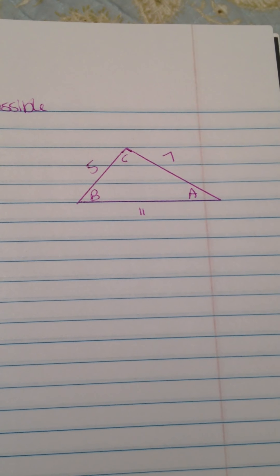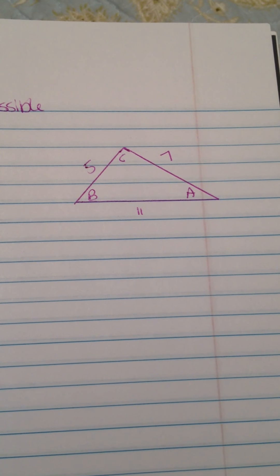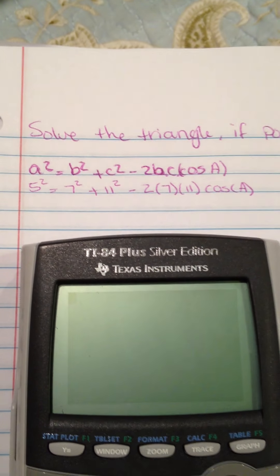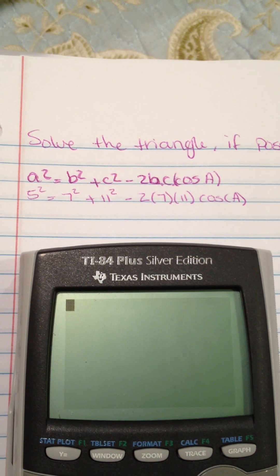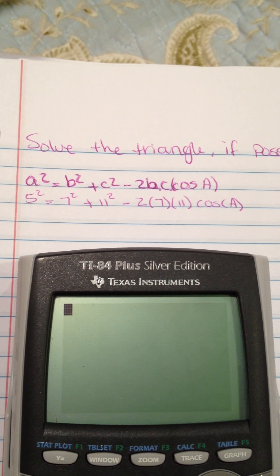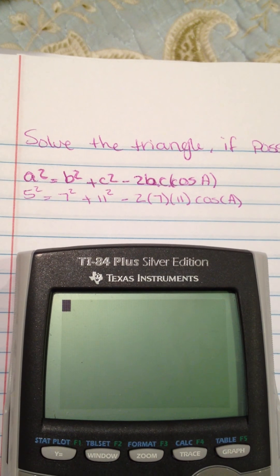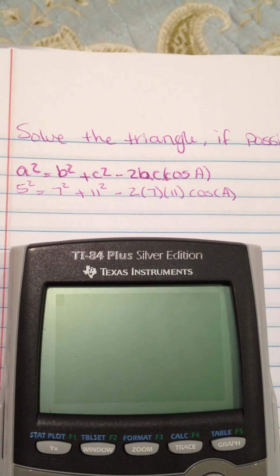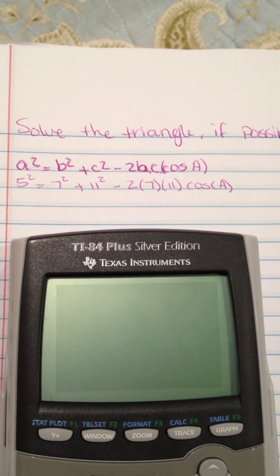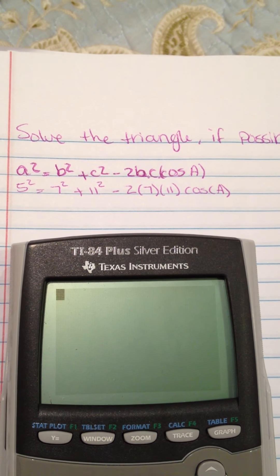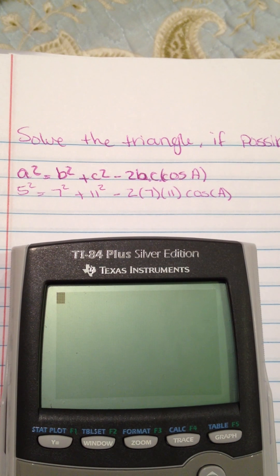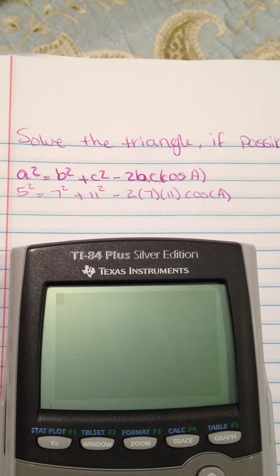Solve the triangle if possible. We have a side-side-side triangle, so we need to find the three angles. I'm going to use the law of cosines to solve it. The formula is: a squared equals b squared plus c squared minus 2 times b times c times cosine of A. So it's 5 squared equals 7 squared plus 11 squared minus 2 times 7 times 11 times cosine of A.